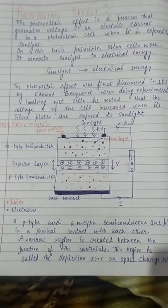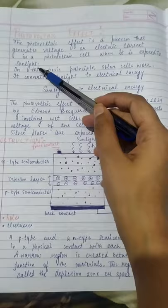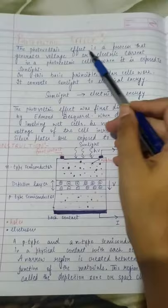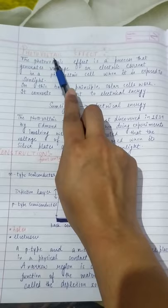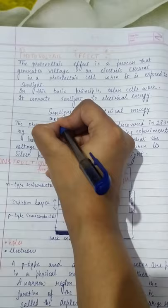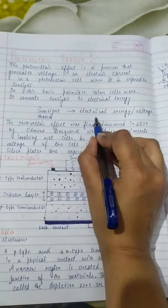The topic is the photovoltaic effect. The photovoltaic effect is a process that generates voltage or electric current in a photovoltaic cell when it is exposed to sunlight. In the photovoltaic effect, electric current or voltage is generated when you expose the cell or any device to sunlight — meaning photons are converted into voltage, or sunlight is converted into electrical energy.